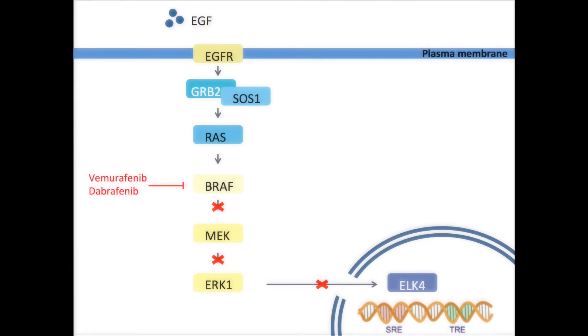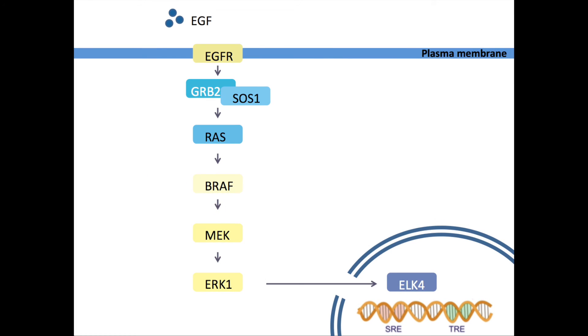However, almost one in five patients with this BRAF mutation do not respond to treatment as a result of intrinsic resistance. And almost all patients who do respond will eventually develop acquired resistance. Due to this resistance, the tumor will grow and spread again. In more than 70% of the cases, the resistance is caused by reactivation of the MAP kinase pathway. This can happen through several mechanisms.